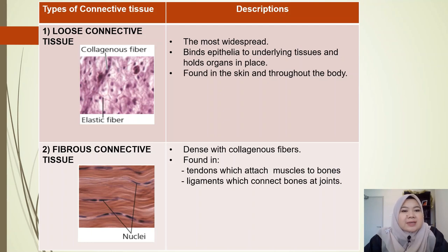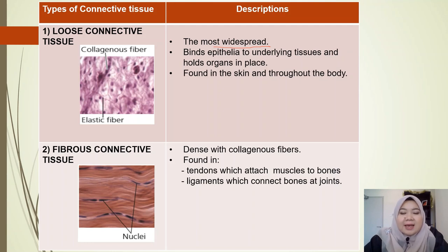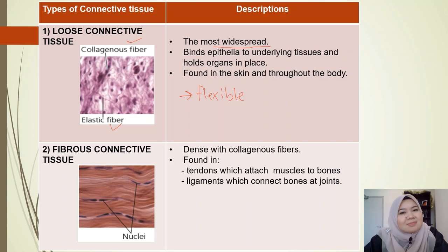The first connective tissue is loose connective tissue, which is the most widespread and abundant connective tissue in our body. It binds epithelial cells to the underlying tissues and holds organs in place. It is found in the skin and basically throughout the whole body. It has both collagenous and elastic fibers, making it very flexible, though not particularly strong.